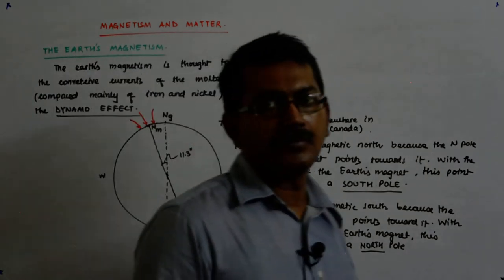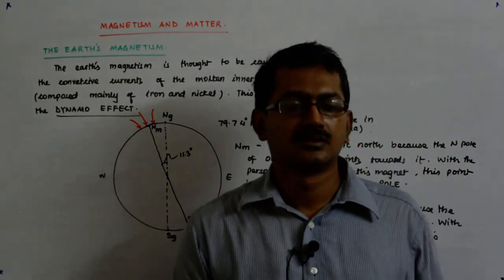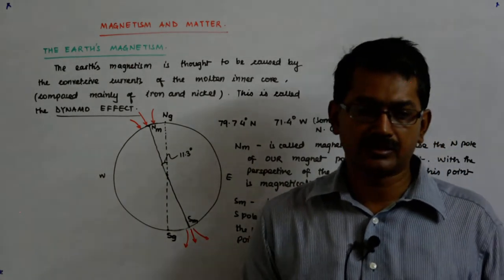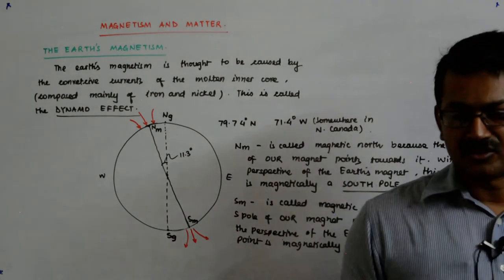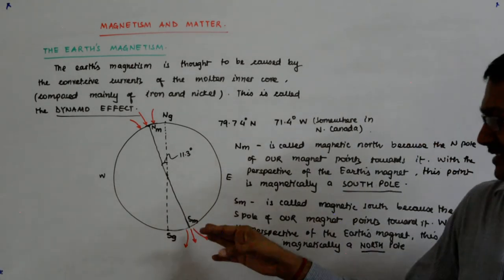It is NM because it is the north seeking pole. Where my north seeks this pole. And this is SM because my south seeks that.